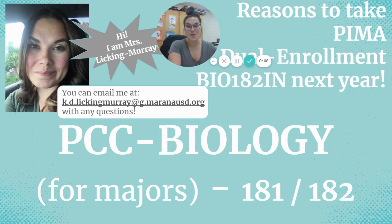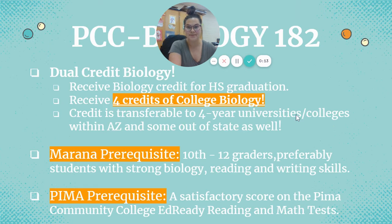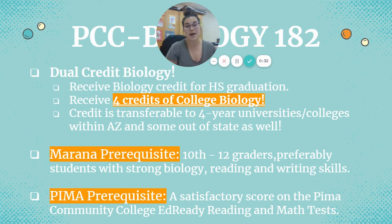I want to share with you why you need to sign up for PCC Bio 182 for majors. PCC Bio is a dual college biology credit — you will receive both bio credit for high school graduation and college credit biology from Pima as well. This college credit is transferable to four-year universities and colleges within Arizona and some out-of-state colleges as well. In order to take this class here at Marana, you need to be a 10th, 11th, or 12th grader with strong biology, reading, and writing skills. To fulfill the requirements at Pima, you need a satisfactory score on their ed-ready reading and math tests.